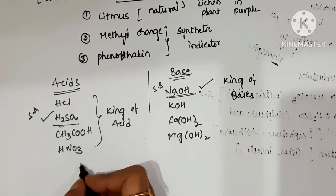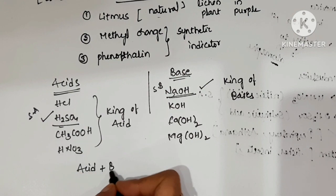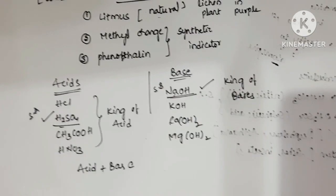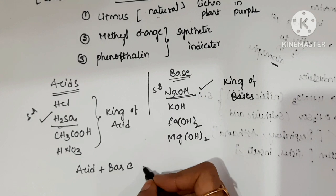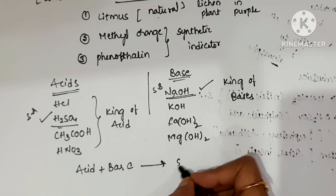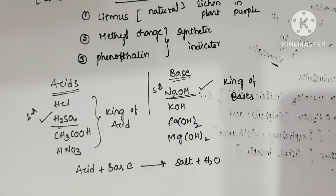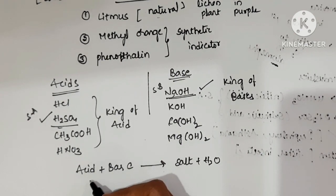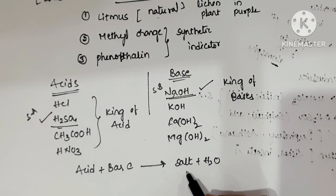What products are formed when we mix acid and base? When acid and base are mixed, salt and water are formed. Acid and base are the reactants, and salt and water are the products.